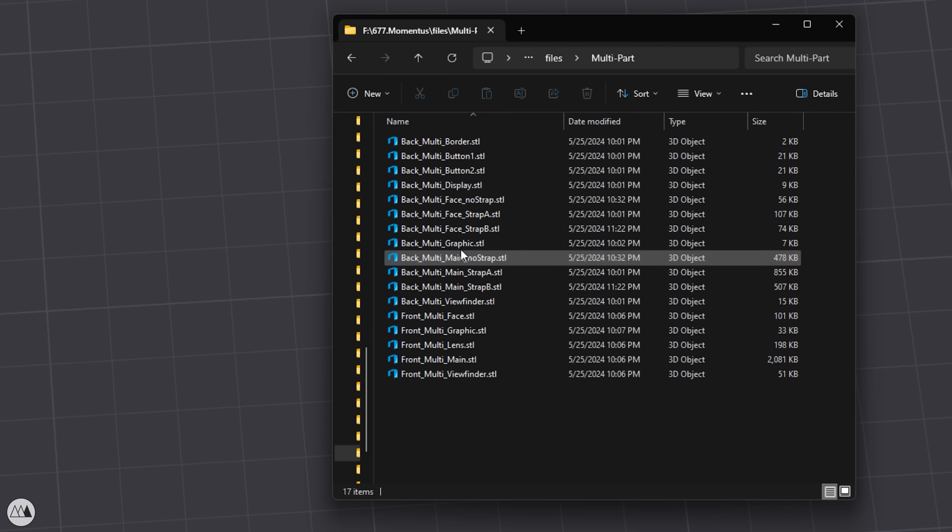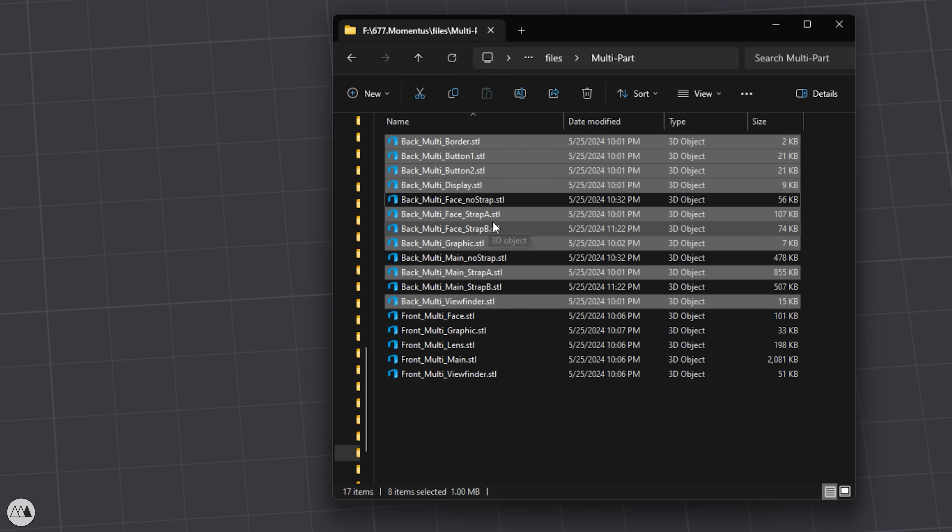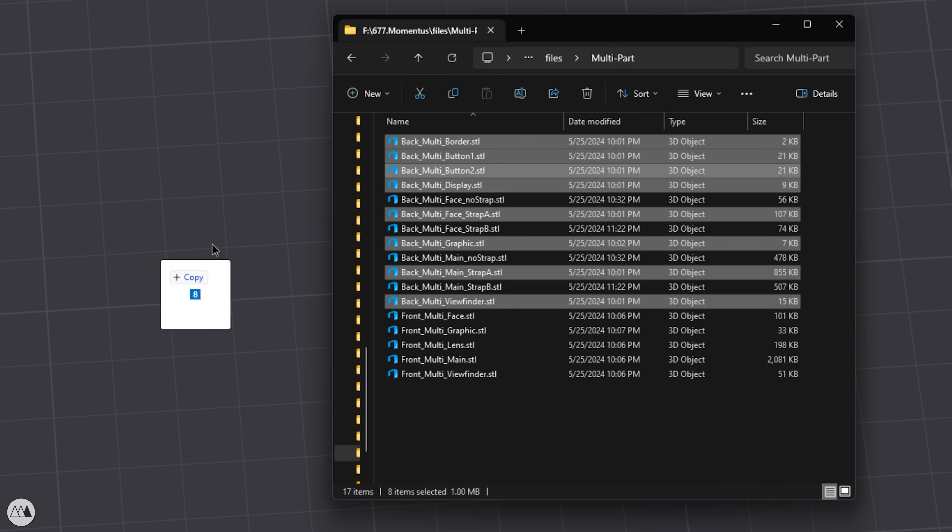There are also a few multi-color versions of the camera body. For those, you'll select all the parts you need at once. So for the back here, we'll make sure to only choose one variation on the strap connectors. I'll do strap A again.